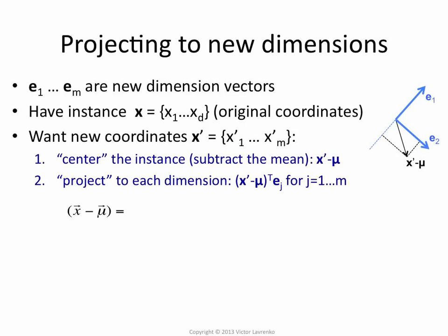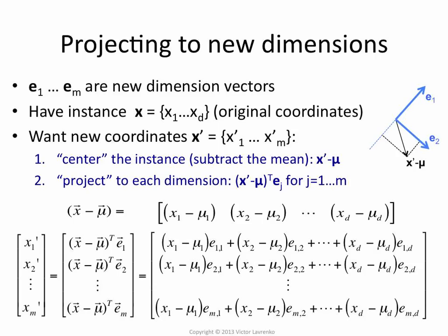Symbolically, we have x, we subtract the mean of all the data points from it — subtracting the mean of each attribute, so for example the mean of the second attribute is subtracted from x2. Then we multiply x minus mu by e1, our first eigenvector (the first principal component). That dot product — multiplying the first attribute of e1 by the first attribute of x, second by second, third by third, and summing — gives a number, and that number is x1 prime: your coordinate along new dimension 1. Multiply by e2 and you get the coordinate along new dimension 2. Repeat m times for m eigenvectors and you end up with m coordinates.